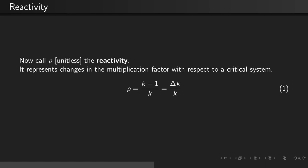The reactivity represents changes in the multiplication factor with respect to an exactly critical system. Thus, the reactivity is equal to k minus 1 divided by k, or delta k divided by k.